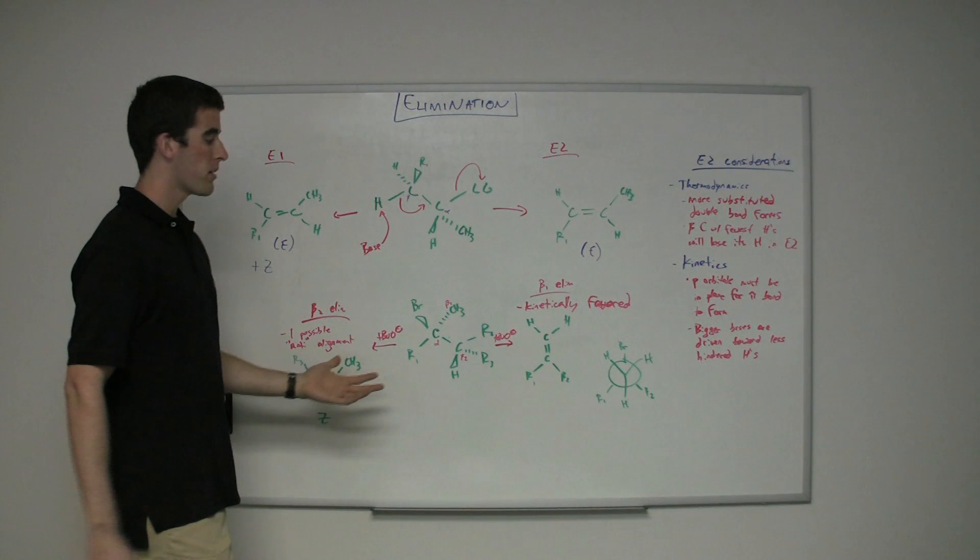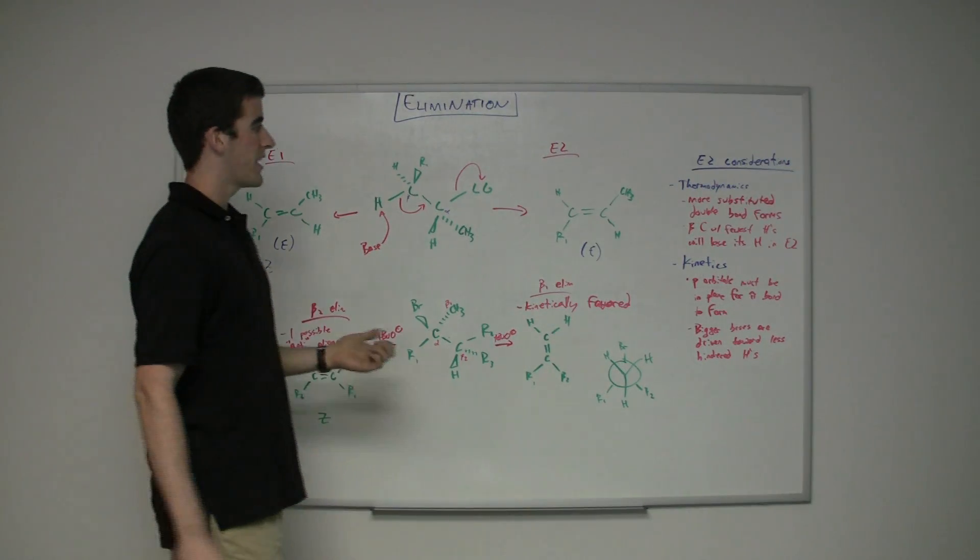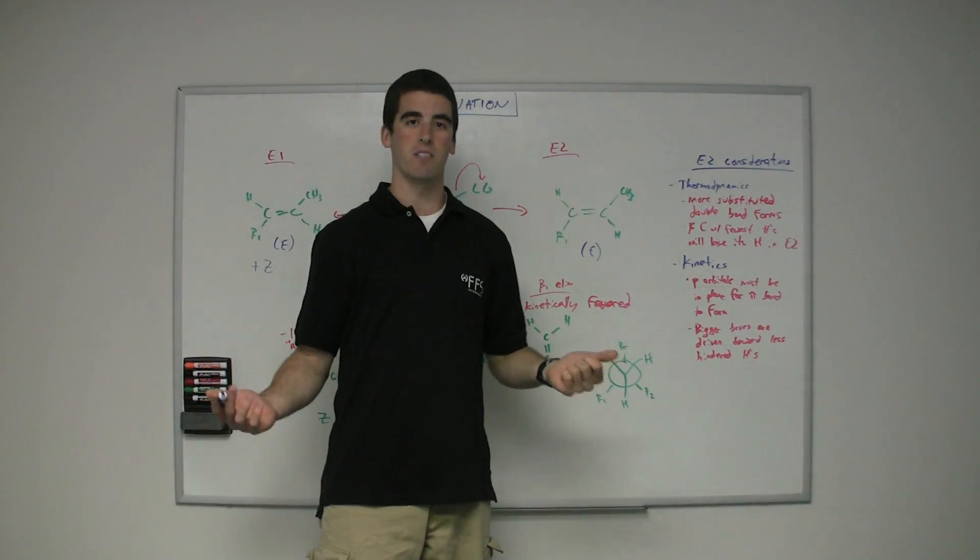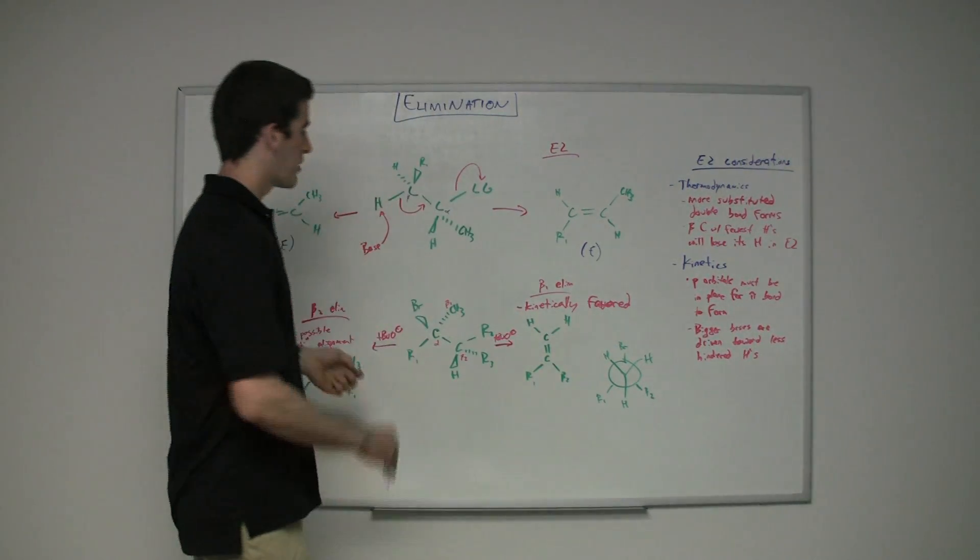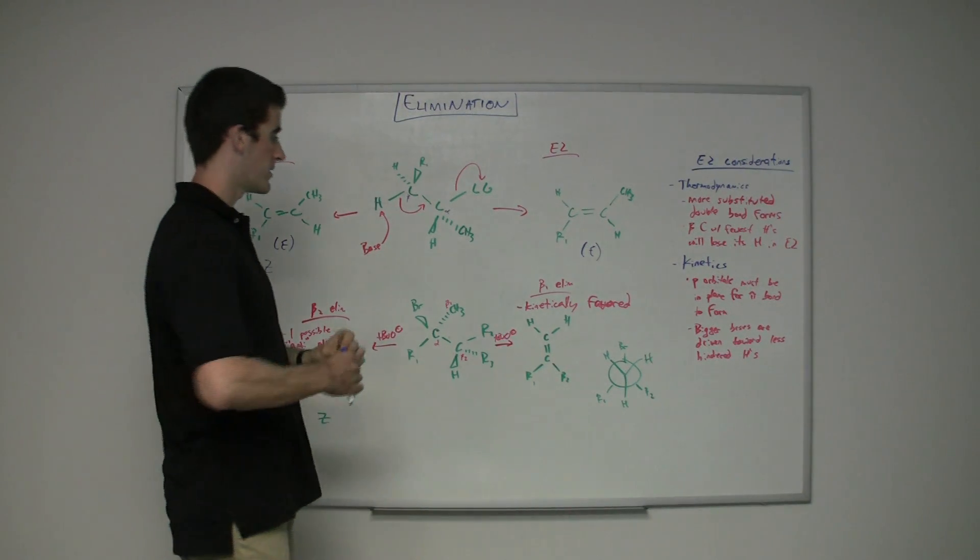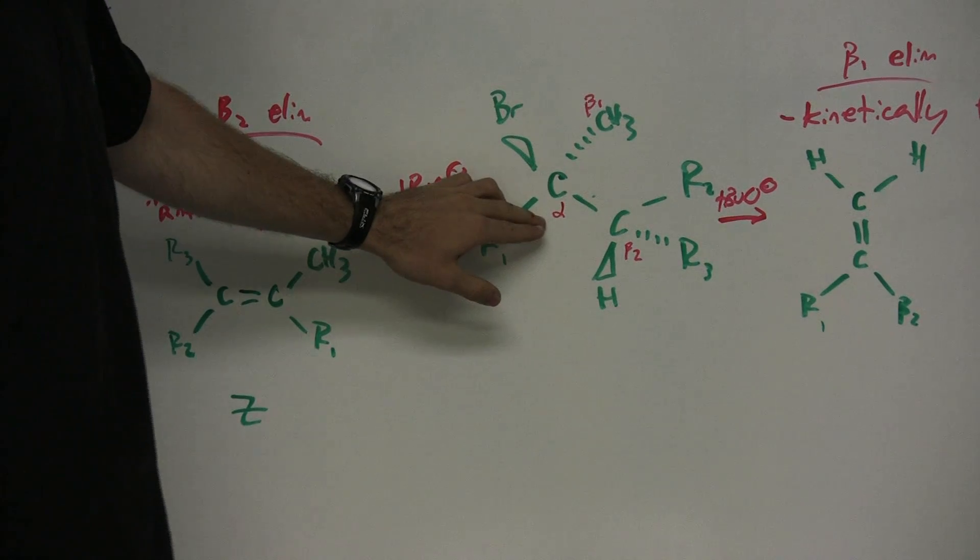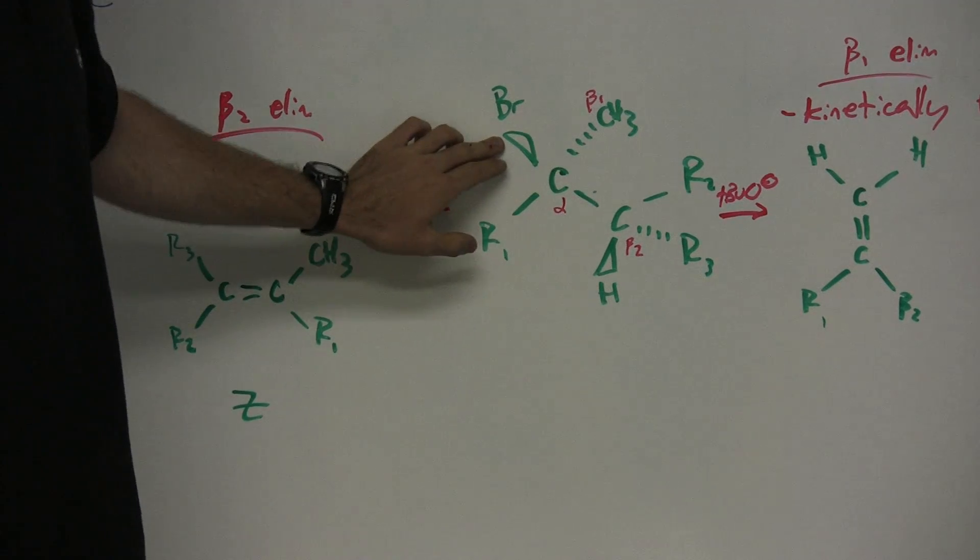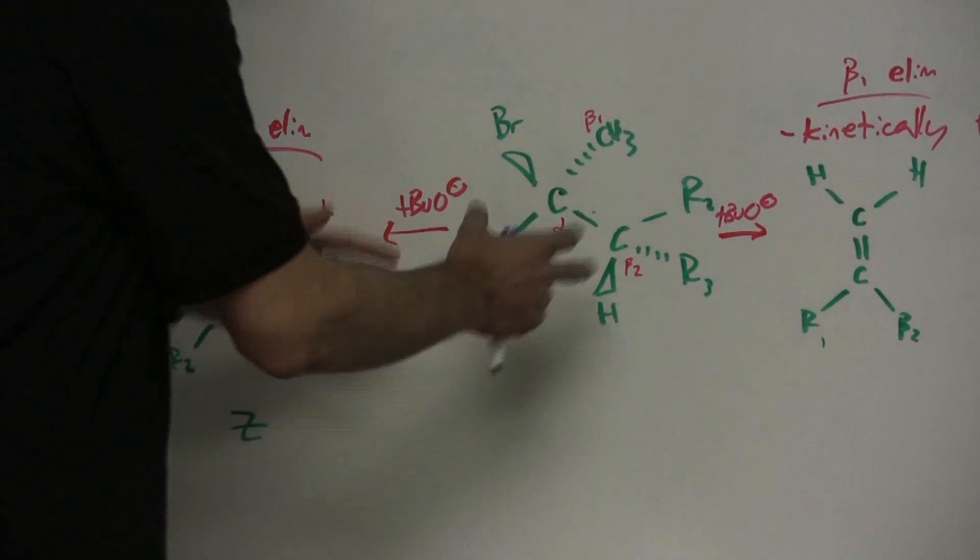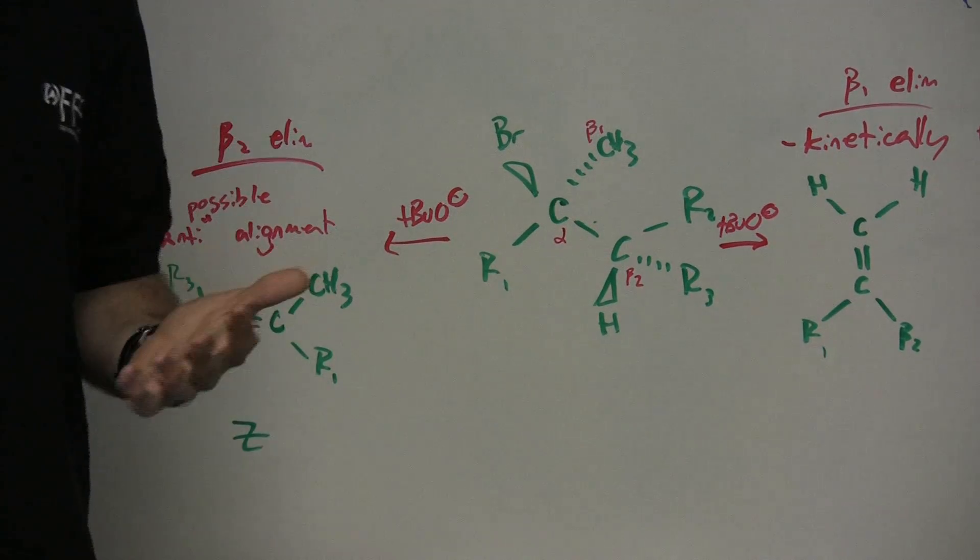So if we look at an example with a big base, t-butoxide here. T-butoxide has the kind of notation of a BSB, big strong base, and we'll use that as an example of our big base here. Well, here's what our molecule starts off with. We have our alpha carbon here because we've got our leaving group. The bromine is our leaving group here. And we have sort of two beta carbons that we'll take into consideration here.